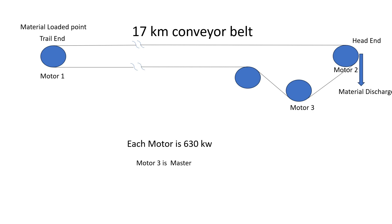Today we will not discuss more about Master-Follower itself — what we are here to discuss is the specific parameter. When we gave a command to run and gave a set point to Motor 3, Motor 3 and Motor 1 were taking high current and high torque. Because of taking high torque, they were taking more load and more current, and the system was tripping. Motor 2 was not taking sufficient torque or current. Why did this happen?